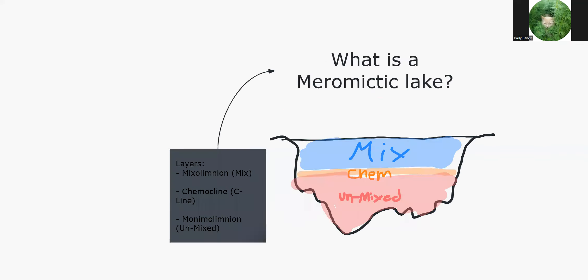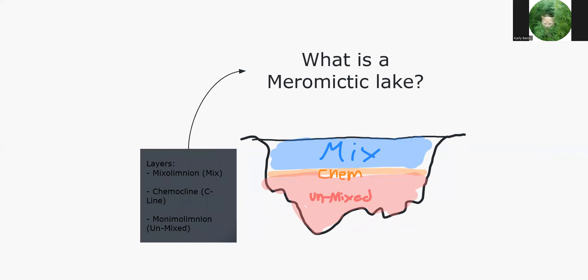So now this is what a meromictic lake looks like. And one can see the major defining characteristic is the distinct layering in the water column.